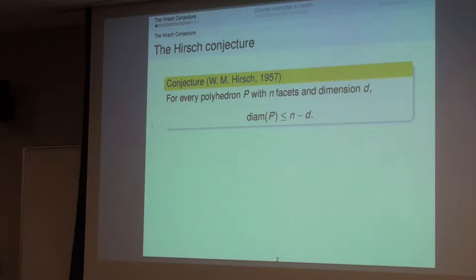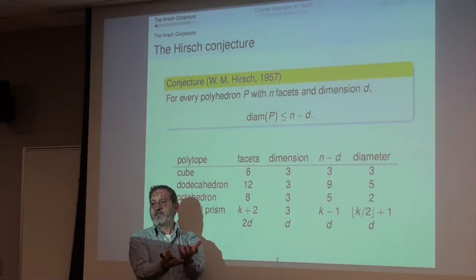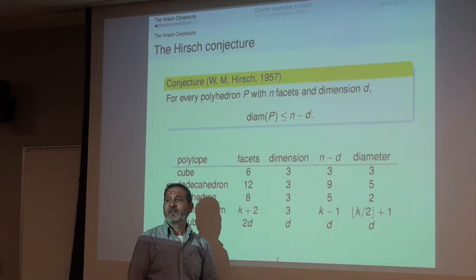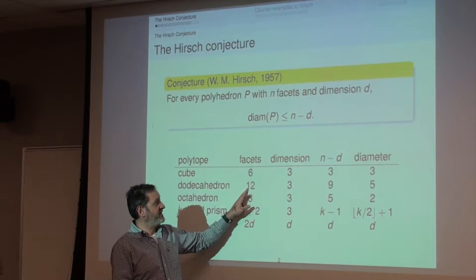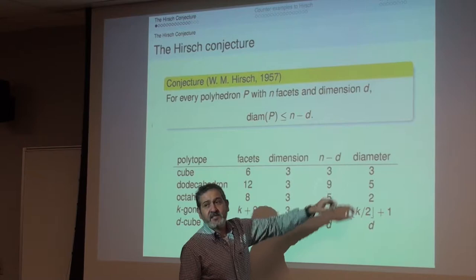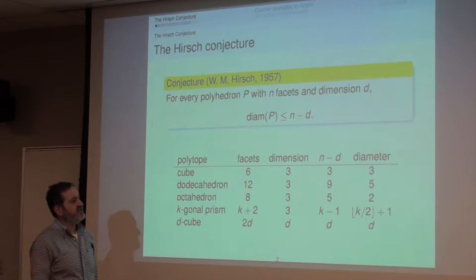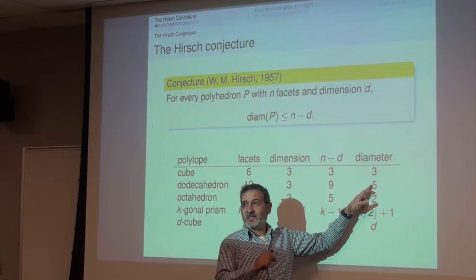Facets: if you think of a three-dimensional polyhedron like a cube, dodecahedron, or tetrahedron, facets are what we normally call faces. For example, a dodecahedron has twelve faces — twelve pentagons — and it has dimension three, so n minus d is nine. Diameter means the diameter in the graph: the polyhedron has a graph that joins vertices through edges. In the dodecahedron, the diameter of the graph is five, meaning you may need five steps to go from one vertex to another.